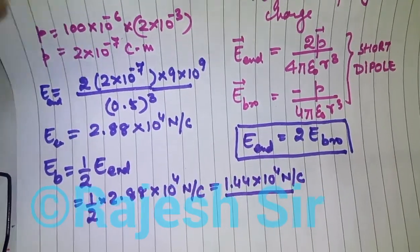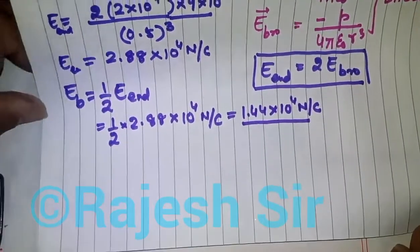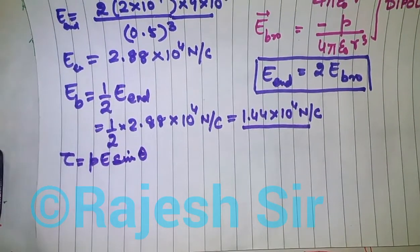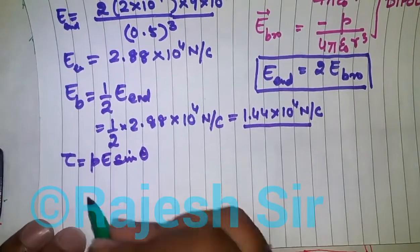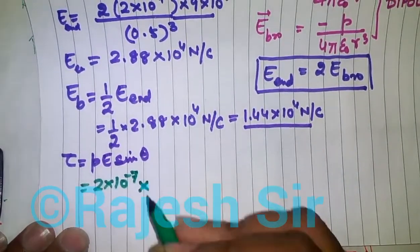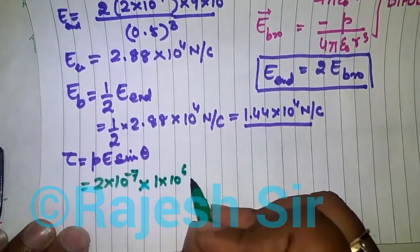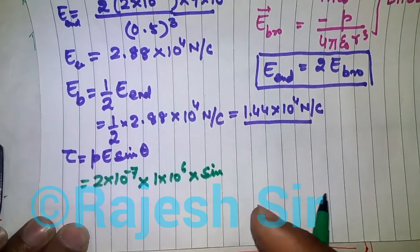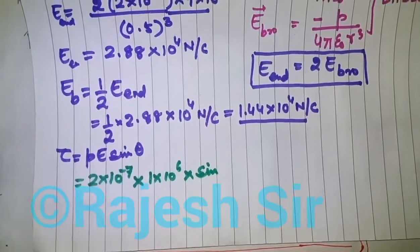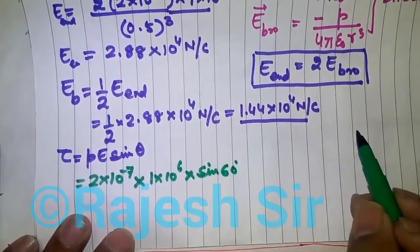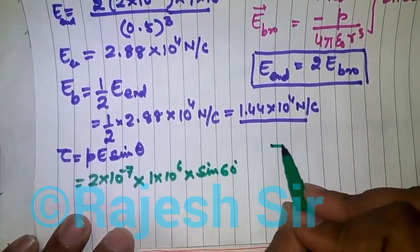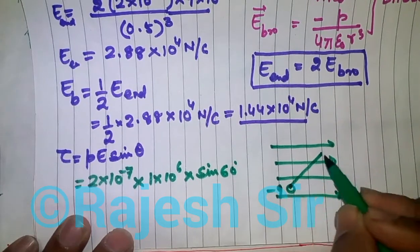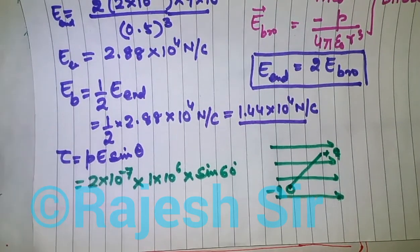The torque experienced by an electric dipole when placed in a uniform electric field is given by: torque = pE sinθ. This is the torque experienced by a dipole placed in any external electric field. Here p = 2×10⁻⁷, the external electric field given is 1×10⁶ N/C, and the dipole is rotated through an angle of 60°.